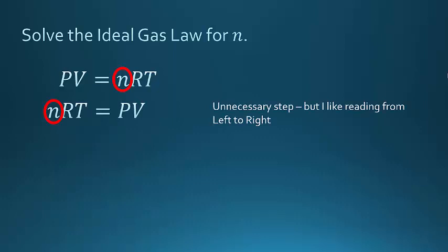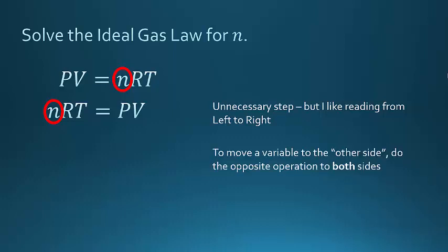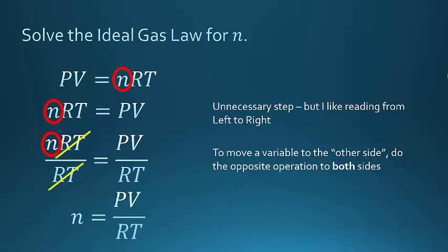So in this case, it's not addition that the operation is. It's multiplication. I have n times RT. So to get rid of that, I'm going to have to do the opposite operation, and the opposite operation to multiplication is division. So I'm going to divide both sides by RT. RT divided by RT is simply 1, so my left-hand side simply becomes n. And my right-hand side is PV divided by the quantity RT.